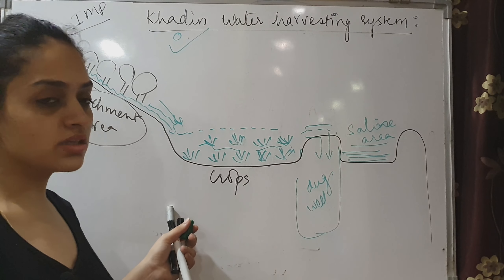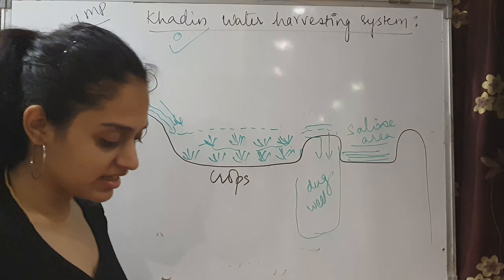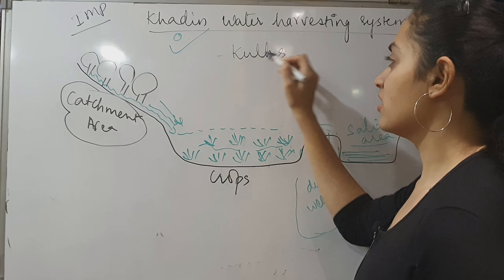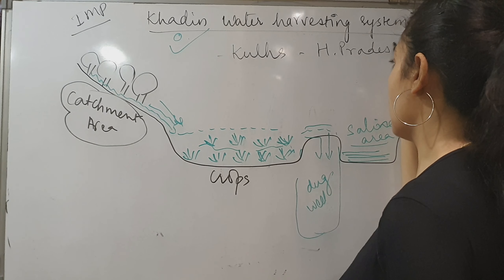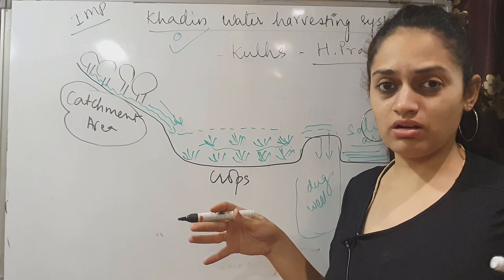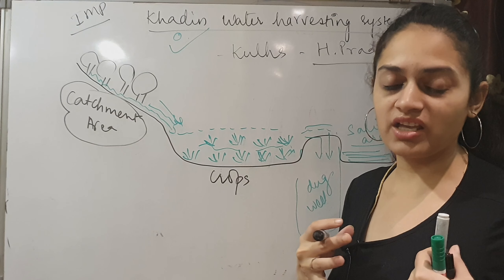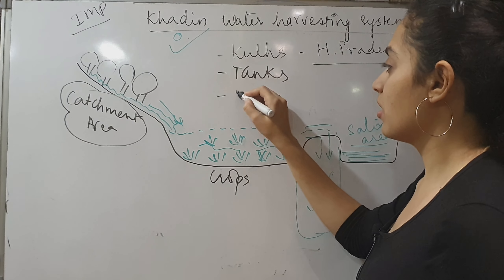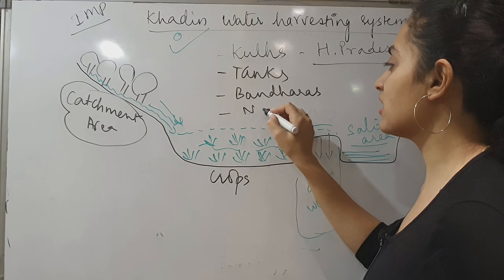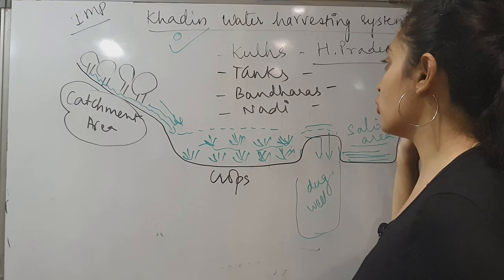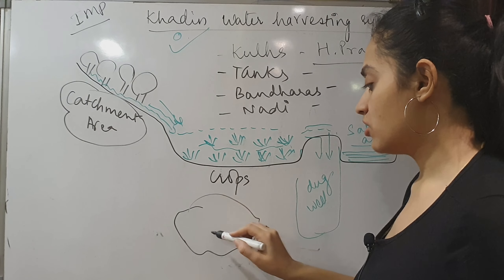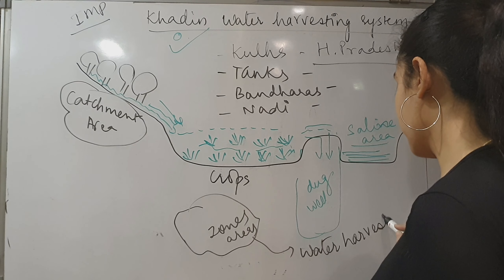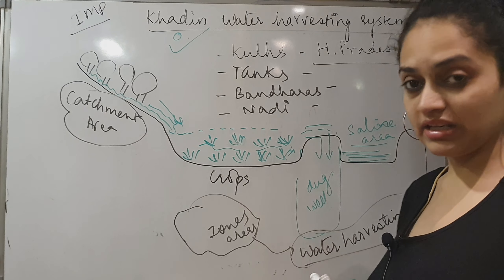There are many water harvesting systems and you have to remember their names. Kulls in Himachal Pradesh — these are very small structures along rivers where water is stored. Then there are Tanks, Bandhas, and other state-specific terminology. In Kerala, there are similar structures. The aim is that everyone has made small zones and areas in which water harvesting is used.